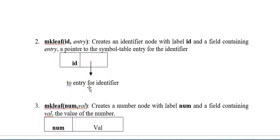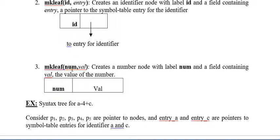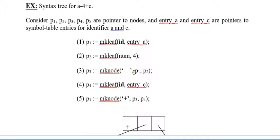And another one is mkleaf with number and val. Number is the number and val is the value of this number. For this we can generate a tree. Here we have consider p1, p2 till p5 are pointers to nodes. And entry_a and c are pointers to the symbol table with identifier a and c. So those are the pointers with functions.